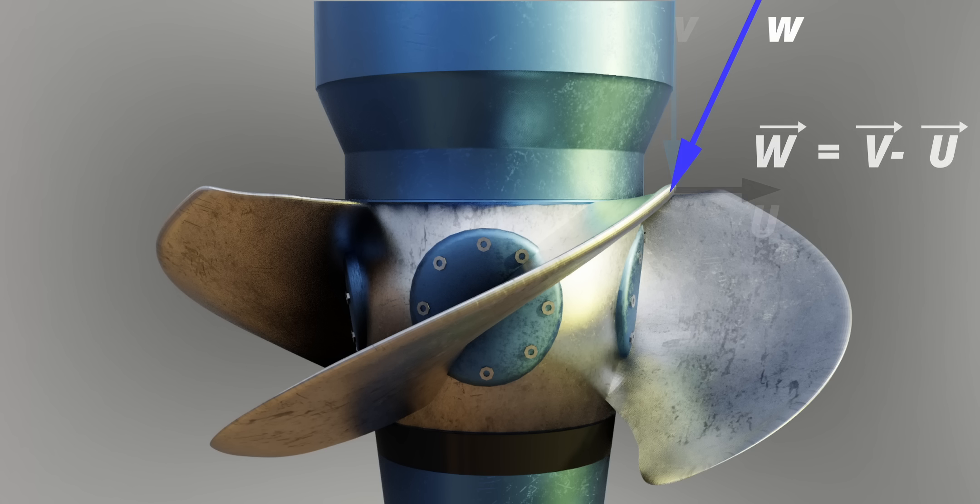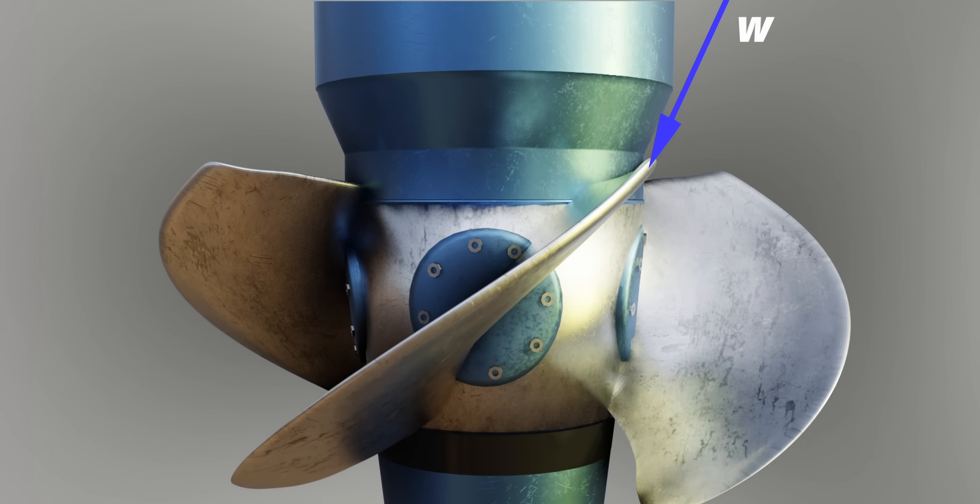For this new relative velocity, the blade airfoil shape is not at an optimum angle of attack. To make it optimum, the blade must rotate in this direction.